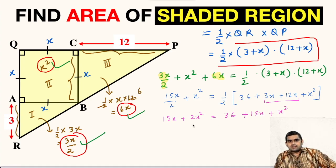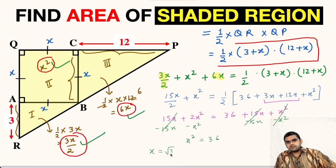Now we will subtract X square from both sides. This will vanish and let us subtract 15X also from both sides, minus 15X. This also cancels. So we are left with X square equals 36. X will be square root of 36, that is 6 units.